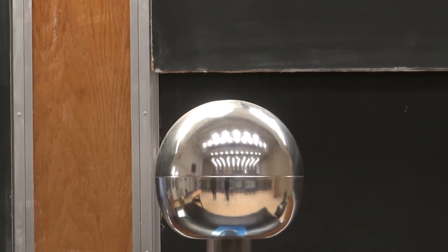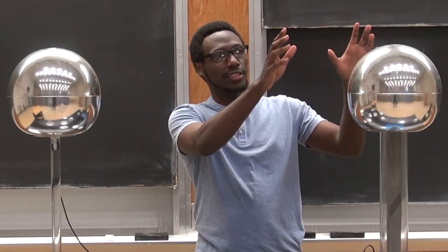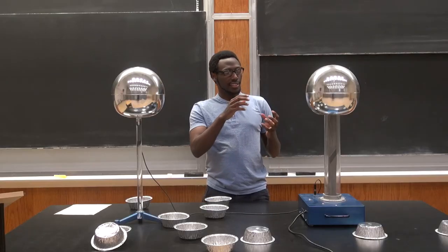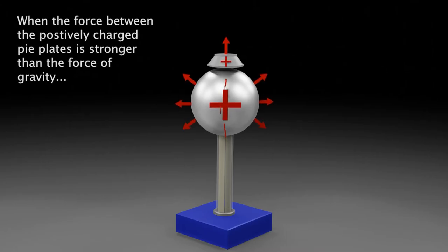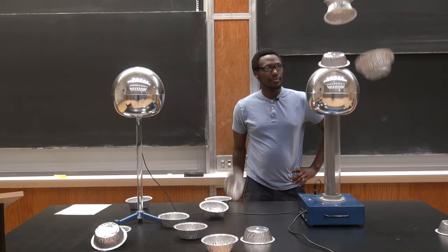The sphere of the Van de Graaff generator charged up positively and also charged all the plates with the same positive charge. And since like charges repel, the pie plates were pushing on each other and one by one, the forces pushing the pie plates apart became stronger than gravity and they flew off one by one.